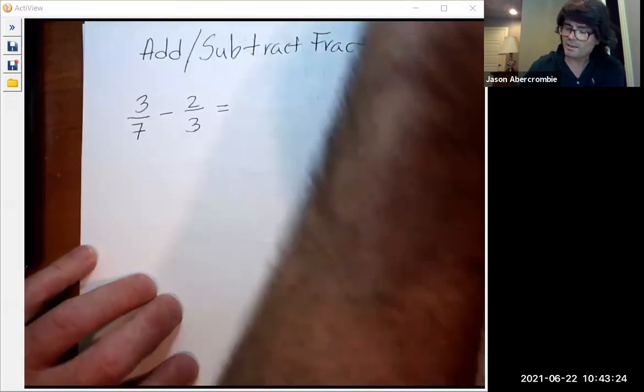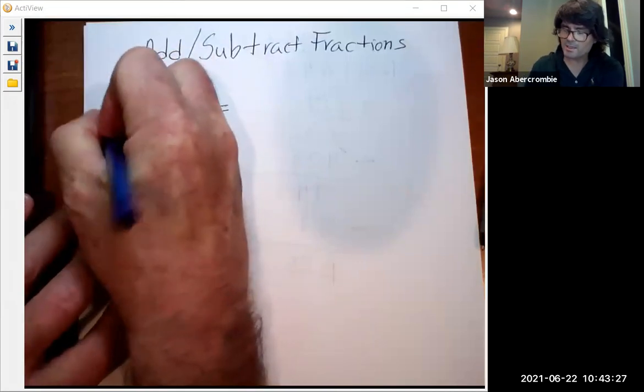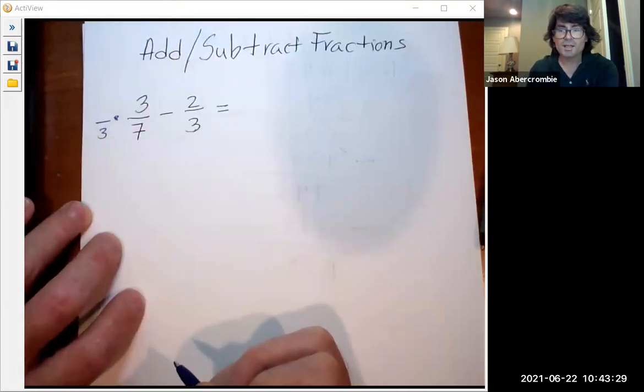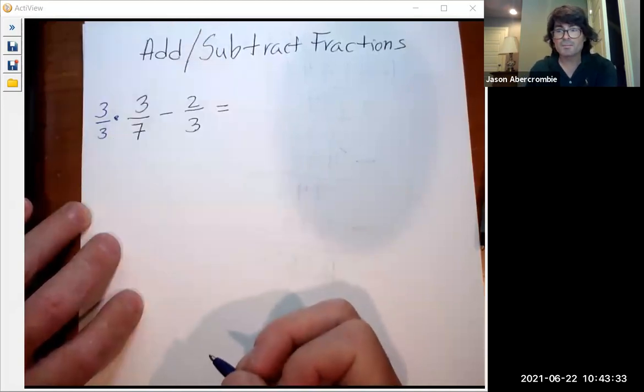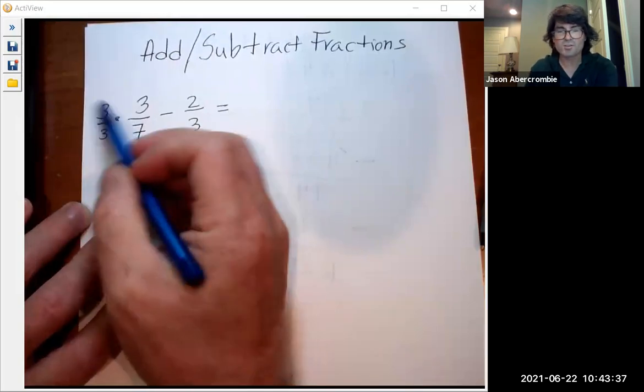So I'm going to go ahead and just say what do I need to do here to make the bottom of 21, multiply by three. And if you do that, if you multiply the bottom times three, you also have to multiply the top times three because this is what we call a well-chosen one.